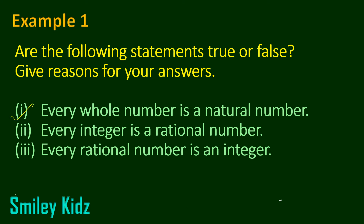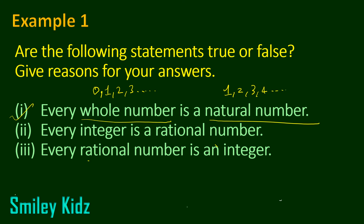First one: every whole number is a natural number. Now, what is a whole number? Whole numbers are the numbers which start from 0 — 0, 1, 2, 3, and so on. What is a natural number? They start from 1 — 1, 2, 3, 4, and so on. These natural numbers are also called the counting numbers.